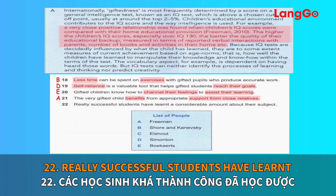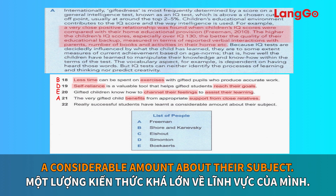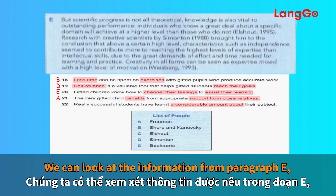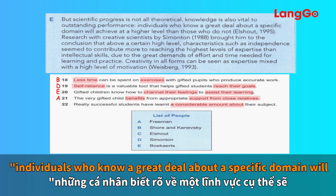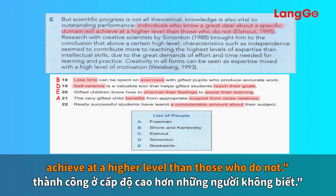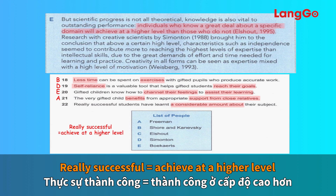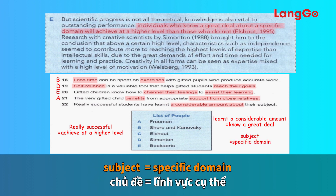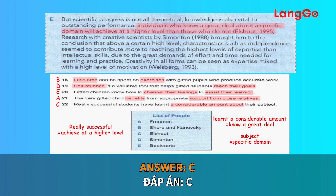Question 22: really successful students have learnt a considerable amount about their subject. Our keywords are learnt and a considerable amount. We can look at the information from paragraph E. Individuals who know a great deal about a specific domain will achieve at a higher level than those who do not. Really successful and achieve at a higher level, learnt a considerable amount and know a great deal, and subject and specific domain are all synonymous here. Our answer, therefore, is C.